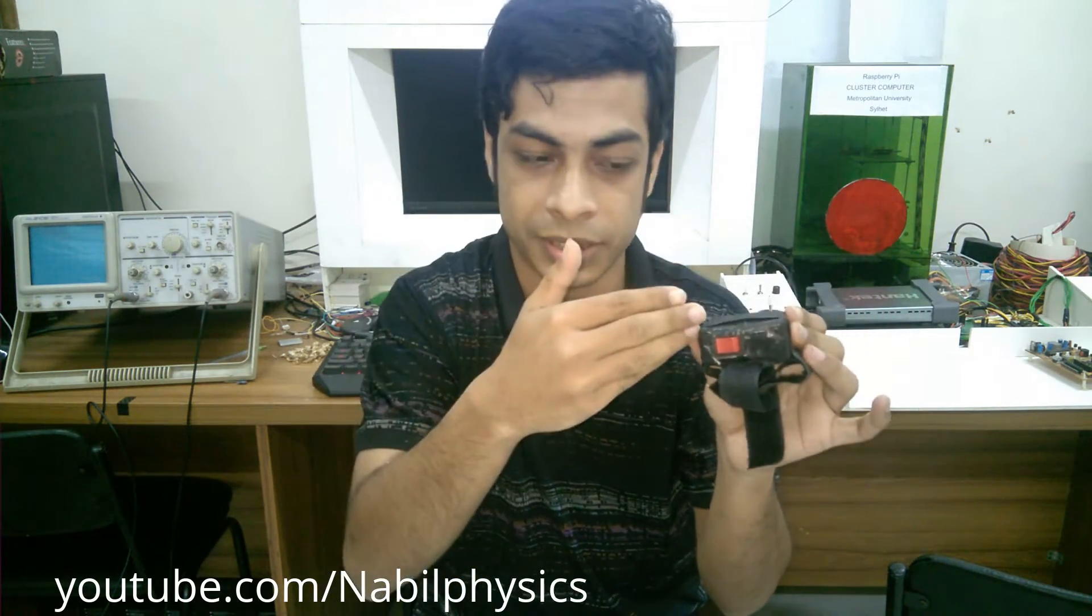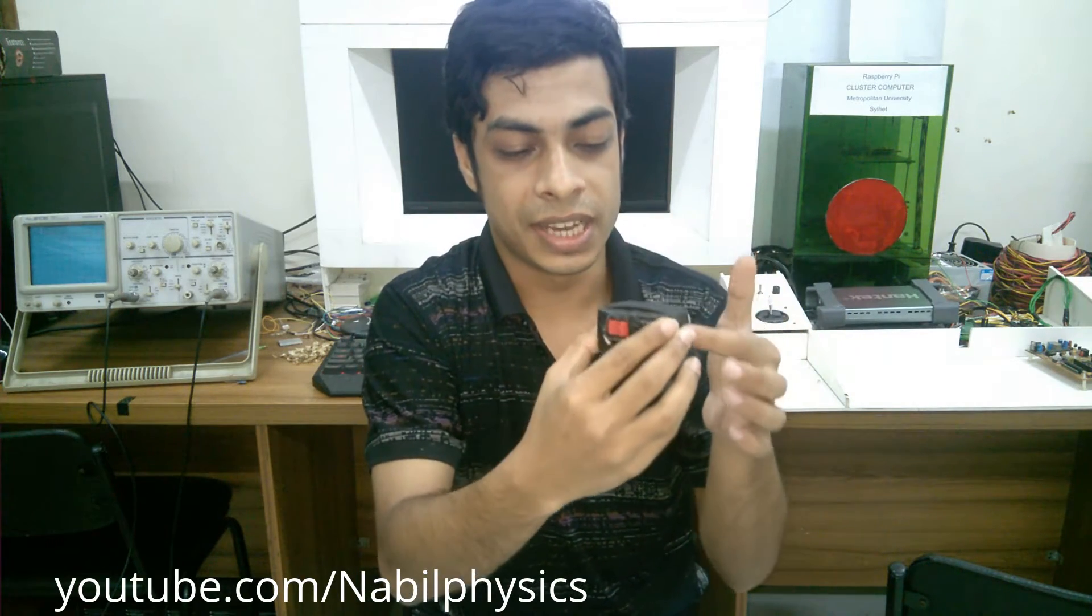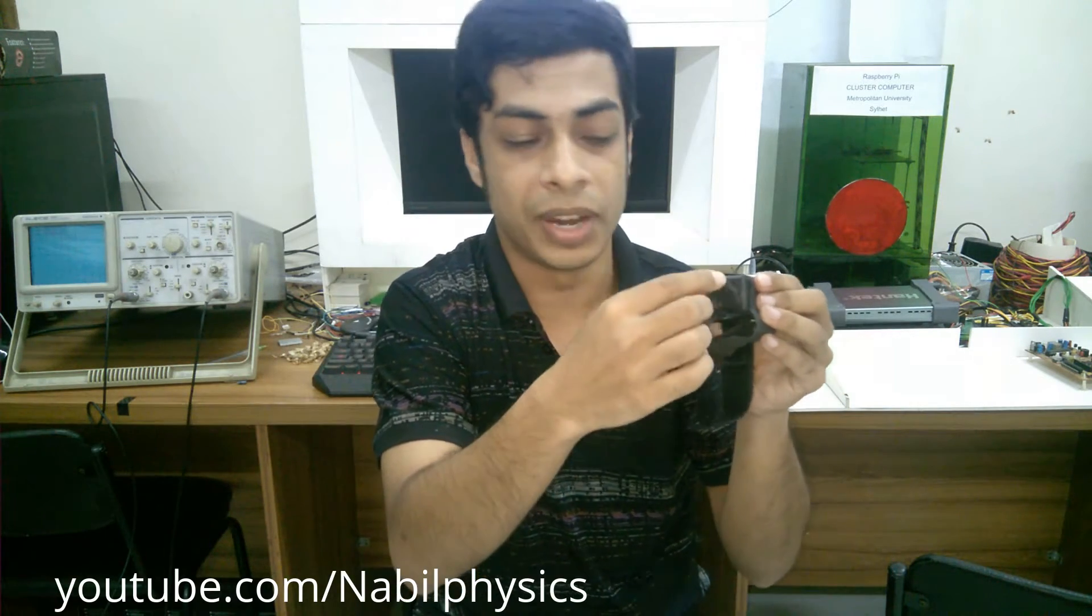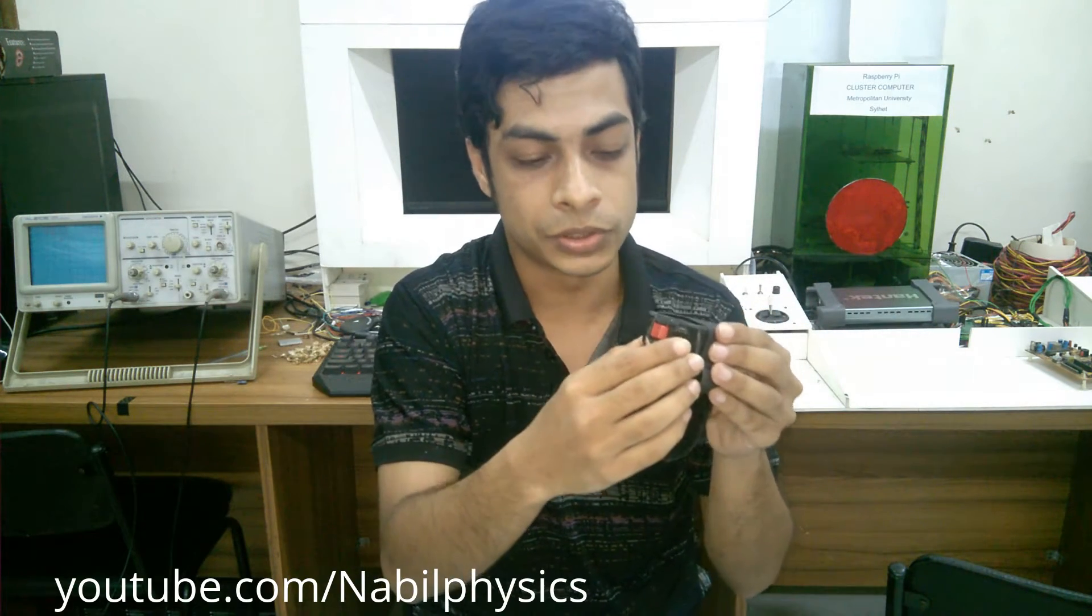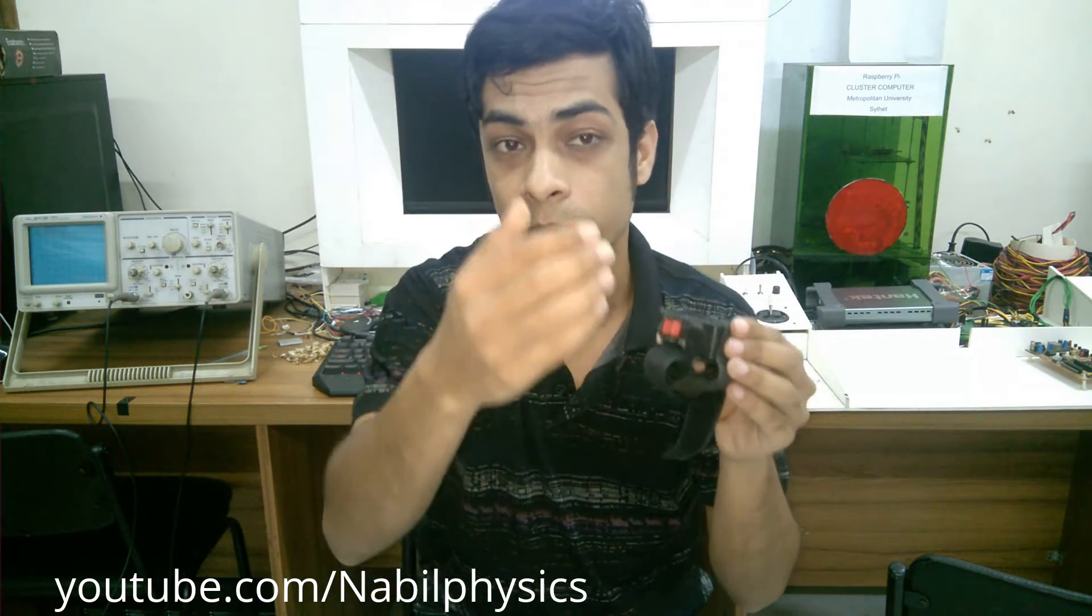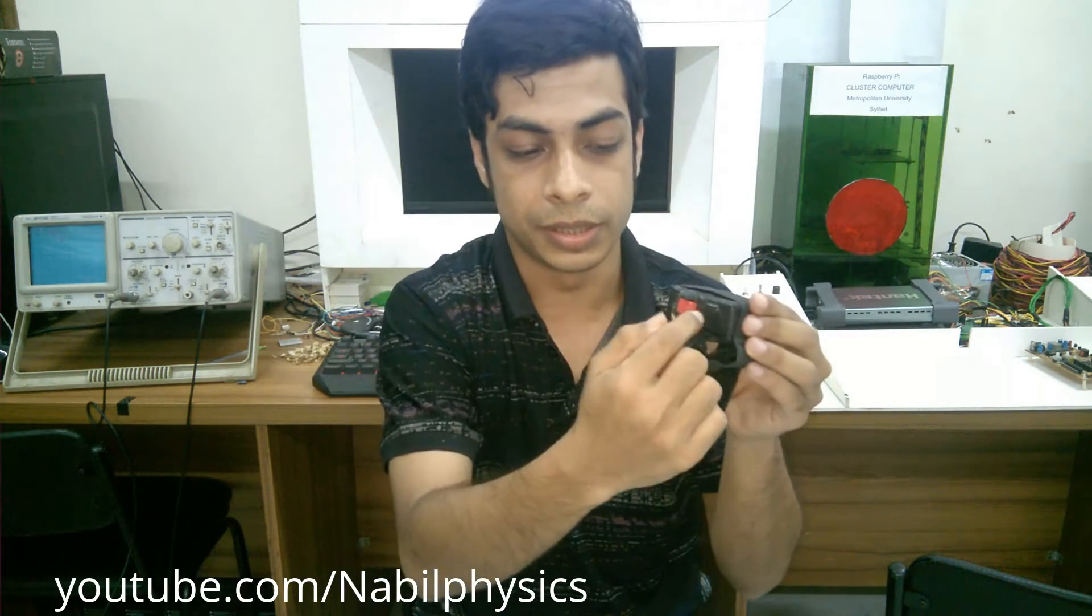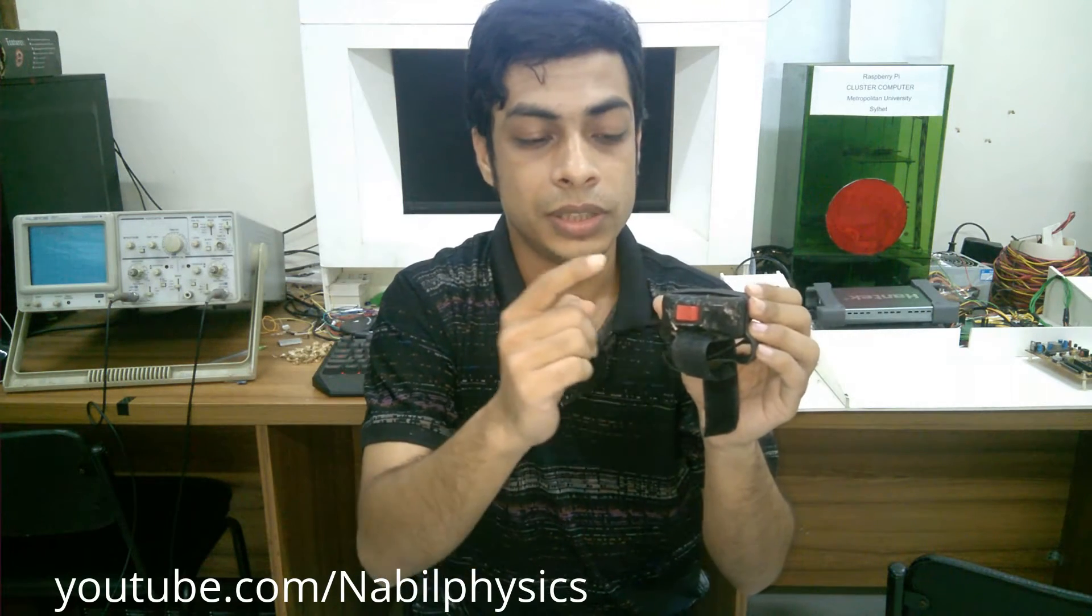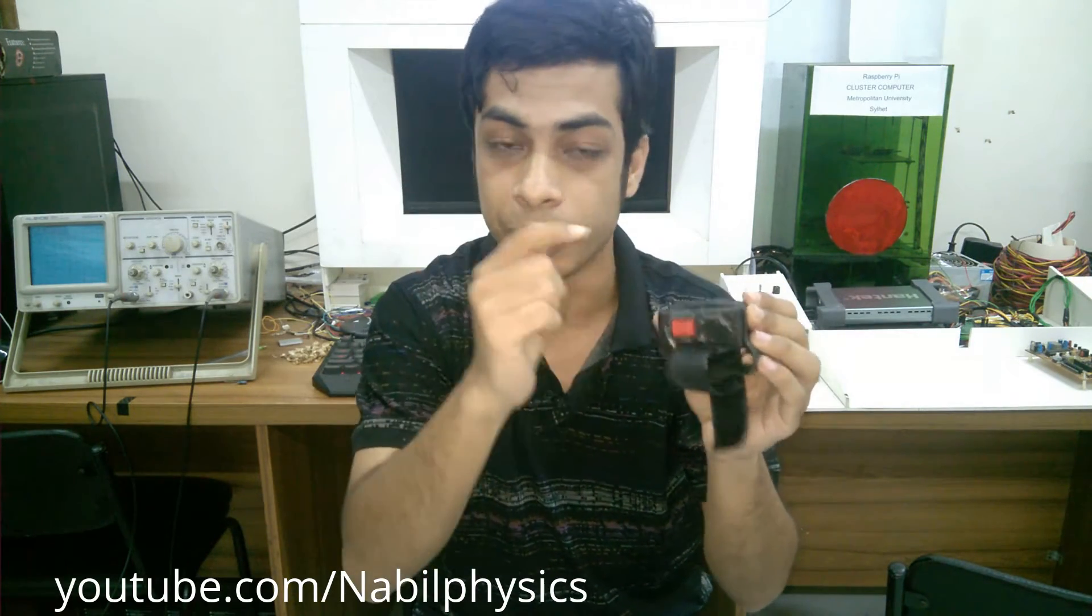Because we don't need heavy processing for this particular device. And one thing is that there is a voltage regulator IC. Because we used here two mobile batteries, which is more than 8 volts. We need a voltage regulator to regulate this voltage to operate this sonar sensor and microcontroller. And we also used here a mobile vibrator which is very important here.